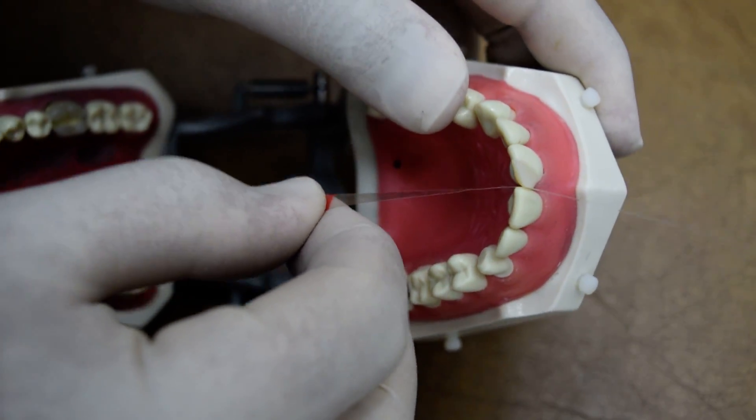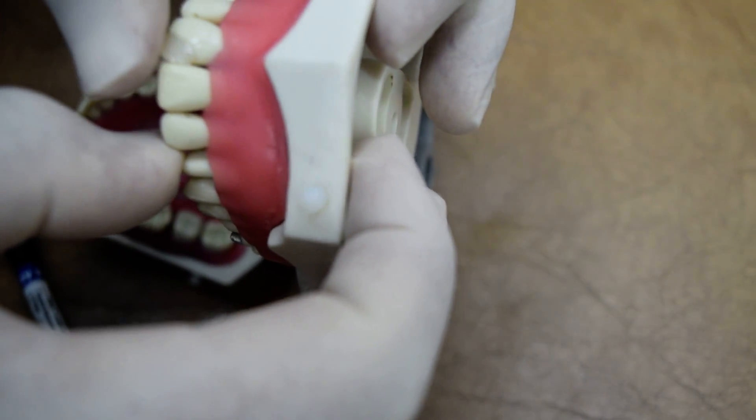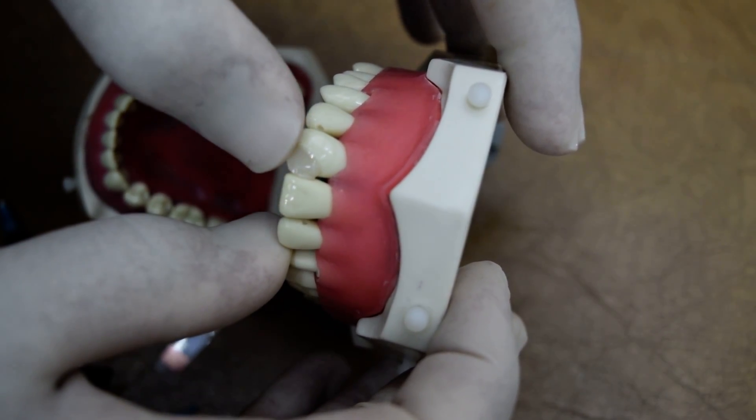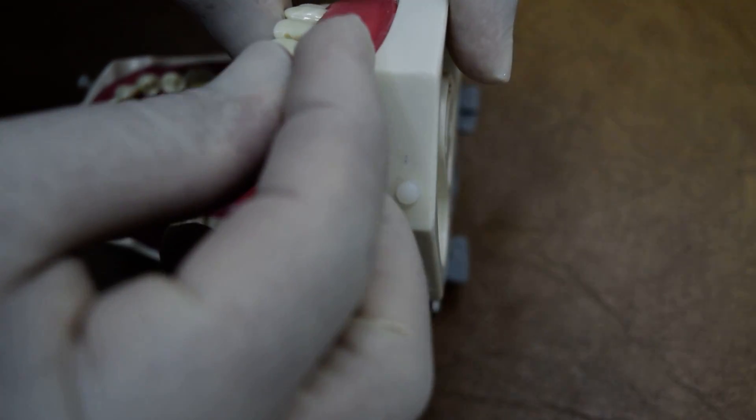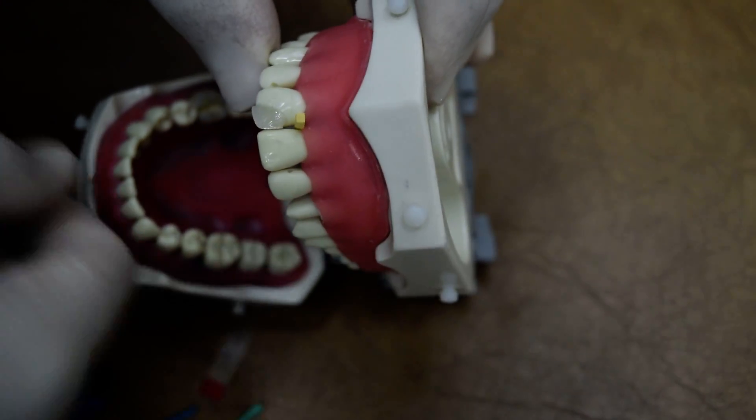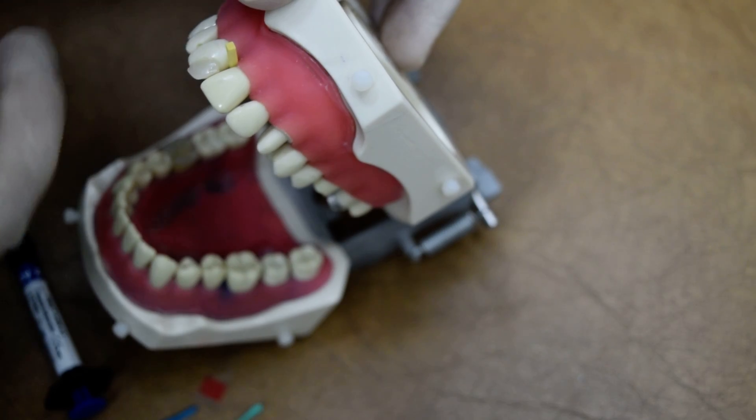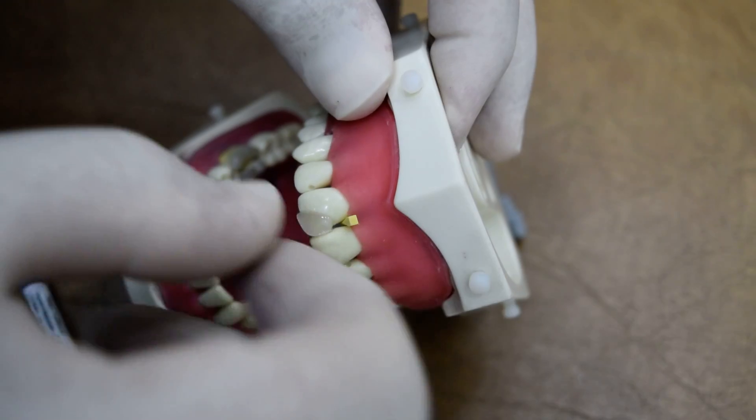Then you can see it's already built now labially and proximally. There is much excess here and also at the proximal part, but we can easily remove it by putting a wedge and then we will use the Soflex to remove this excess.